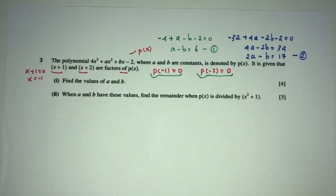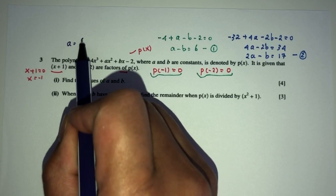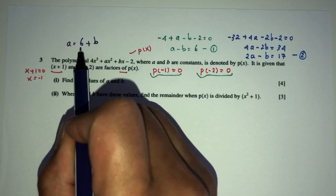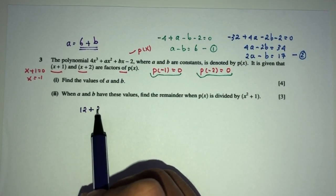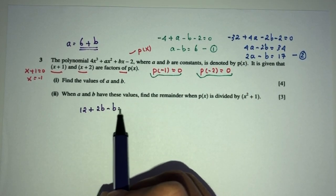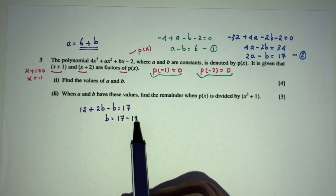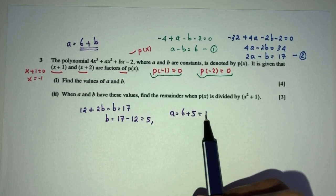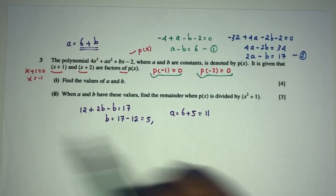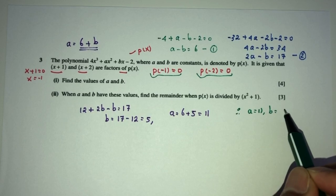Now we have two equations to solve for the values of a and b. Let's make a the subject in equation 1: a will be the value of 6 plus b. Now replace a in equation 2. You have 2 times (6 plus b) minus b, that should be 17. So 12 plus 2b minus b equals 17, giving b equal to 5. Therefore, a equals 6 plus 5, and that should be 11. So we have confirmed the value of a is 11 and b is 5.